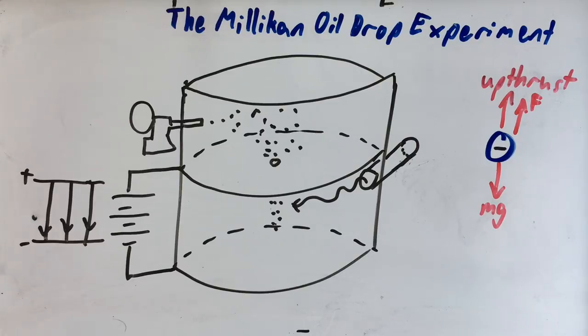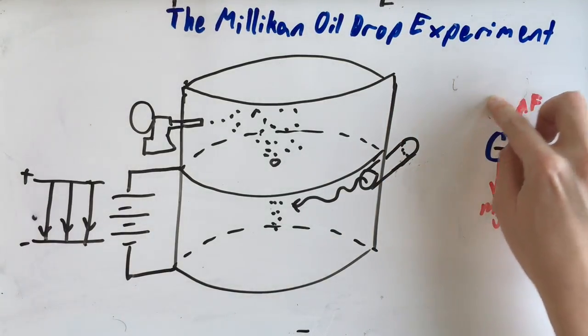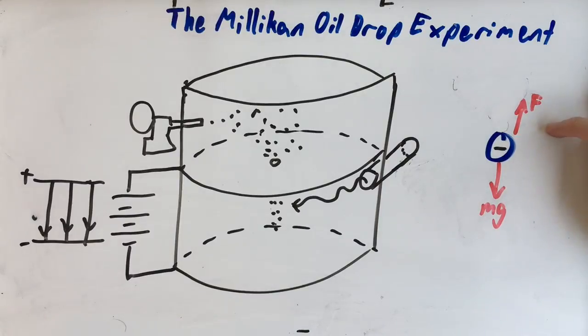As you increase the voltage, the force increases as well until you reach a point of equilibrium where the up thrust is no more because it's not falling anymore, and the force exerted from the electric field is equal to the weight of the oil droplet.